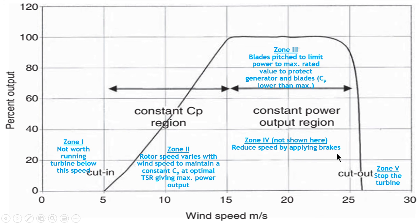Now this is Zone 4. Zone 4 is basically when the wind speed is increasing the rotor speed and we have to apply or use brakes in order to reduce its speed.